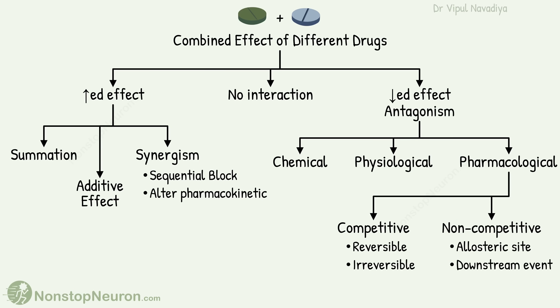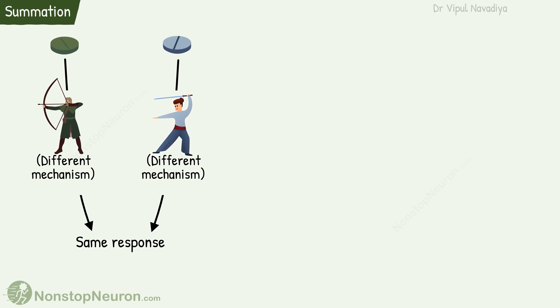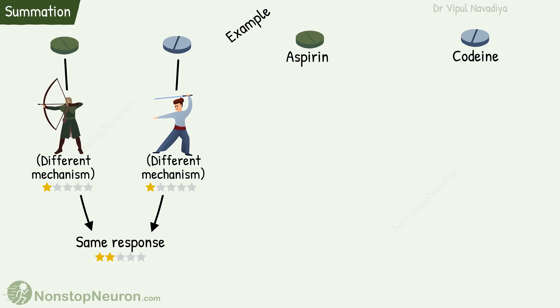So this is an overview. Now let's go into detail about each one. First, increased effects. Here first we have summation. In this, two drugs produce the same response but with different mechanisms. For example, combining aspirin and codeine for analgesia.